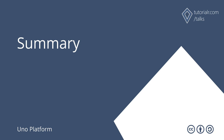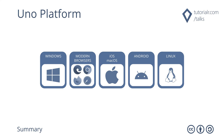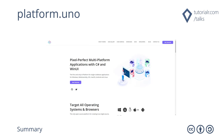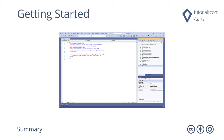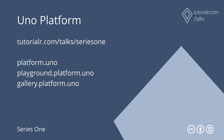Uno Platform is where you can create pixel-perfect multi-platform applications with C Sharp and WinUI. Uno Platform enables modern .NET developers to build applications using a single code base with XAML and C Sharp, targeting Windows, modern browsers using WebAssembly, plus iOS, macOS, Android, and Linux. Platform.uno is where you can get started, check out the gallery, code samples, documentation, and more. Uno Platform can be developed on Windows, Mac, and Linux, and you can create a cross-platform app in Visual Studio 2019 targeting Windows with WinUI, iOS, macOS, or Android with Xamarin, and Linux with Skia. Thanks for watching this talk about Uno Platform. Find out more at Tutorialer.com slash talks slash series one.